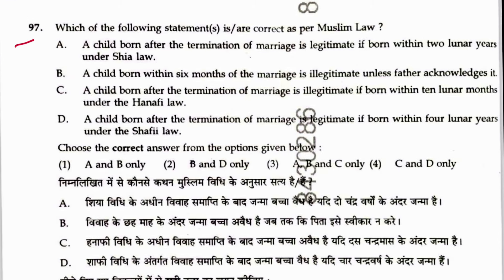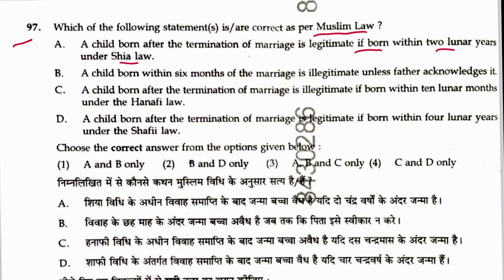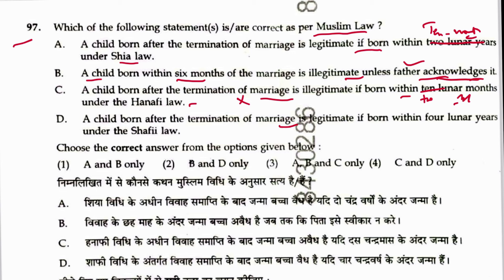Question 97: As per Muslim law — a child born after termination of marriage is legitimate if born within two lunar years under Shia law — incorrect, Shia law says ten lunar months. A child born within six months of marriage is illegitimate unless the father acknowledges it — correct. Under Hanafi law the period is two lunar years; under Maliki law it is four lunar years, not Shafi. Options C and A appear exchanged — this question is not properly framed.